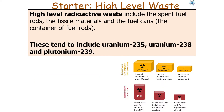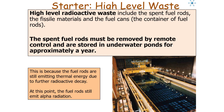High-level radioactive waste includes spent fuel rods, fissile materials, and fuel cans, containing uranium-235, uranium-238, and plutonium-239. The spent fuel rods are first removed by remote control — a human doesn't handle them at any point — and stored in underwater cooling ponds for approximately a year. This is because the rods are still emitting thermal energy from further radioactive decay and still emitting alpha radiation. The ponds cool the rods and block the alpha radiation.